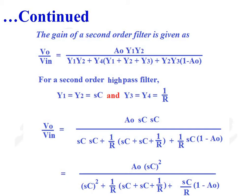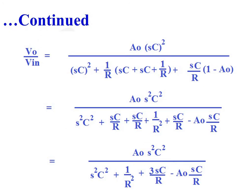So V0/VIN can be written as A0·(SC)² / [S²C² + (1/R)·(2SC + 1/R) + SC/R·(1 − A0)]. Simplifying, we get V0/VIN = A0·S²C² / [S²C² + 1/R² + 3SC/R − A0·SC/R].